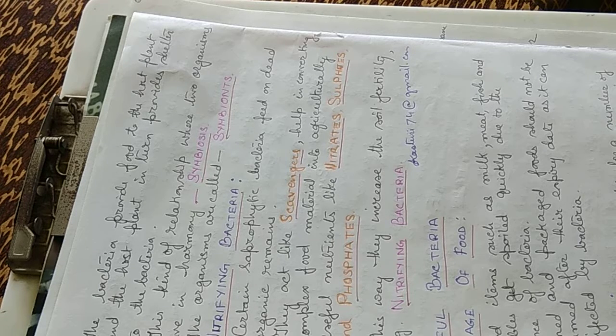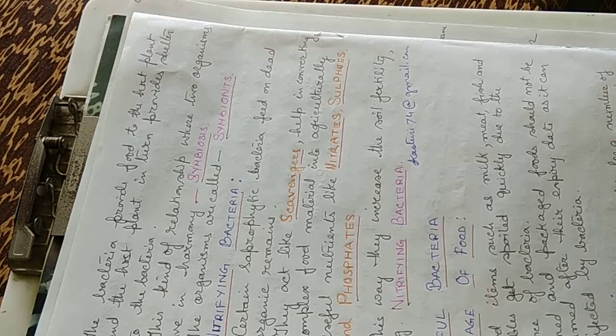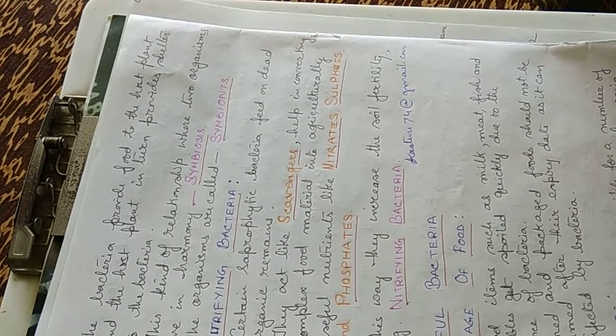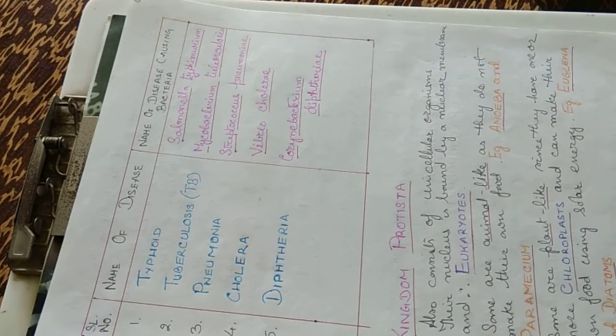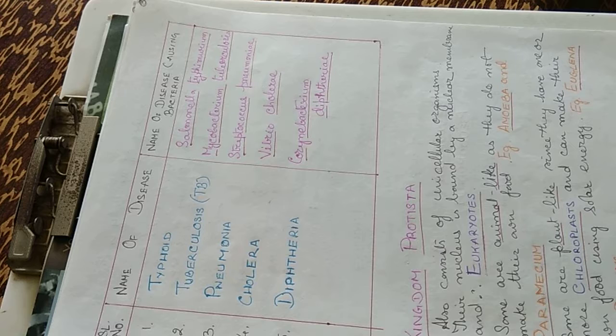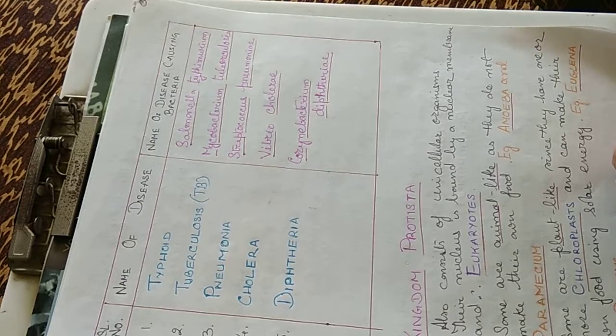Diseases: bacteria are responsible for a number of diseases like typhoid, leprosy, TB that is tuberculosis, pneumonia, cholera, etc. Typhoid bacteria is caused by Salmonella typhimurium, tuberculosis is caused by Mycobacterium tuberculosis, pneumonia by Streptococcus pneumoniae, cholera by Vibrio cholerae and diphtheria by Corynebacterium diphtheriae.